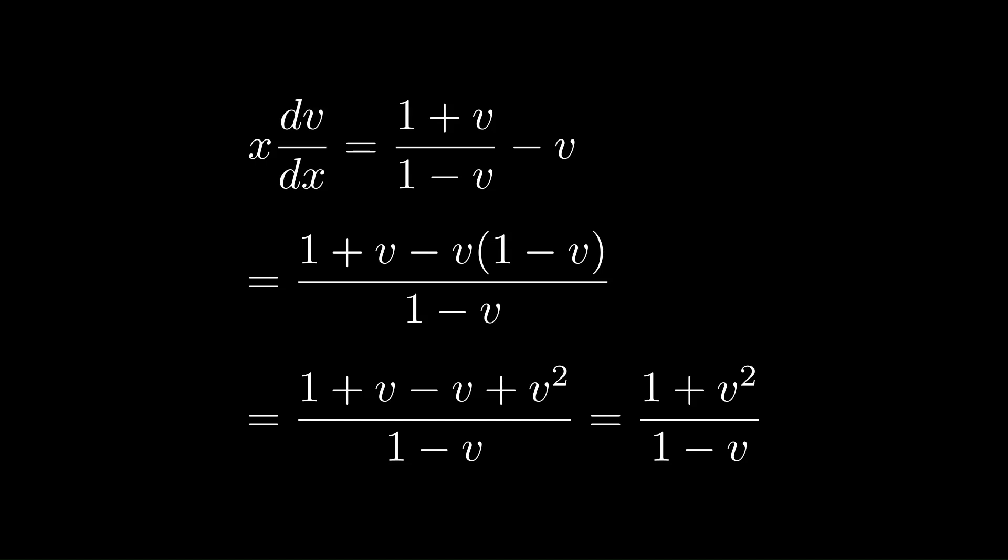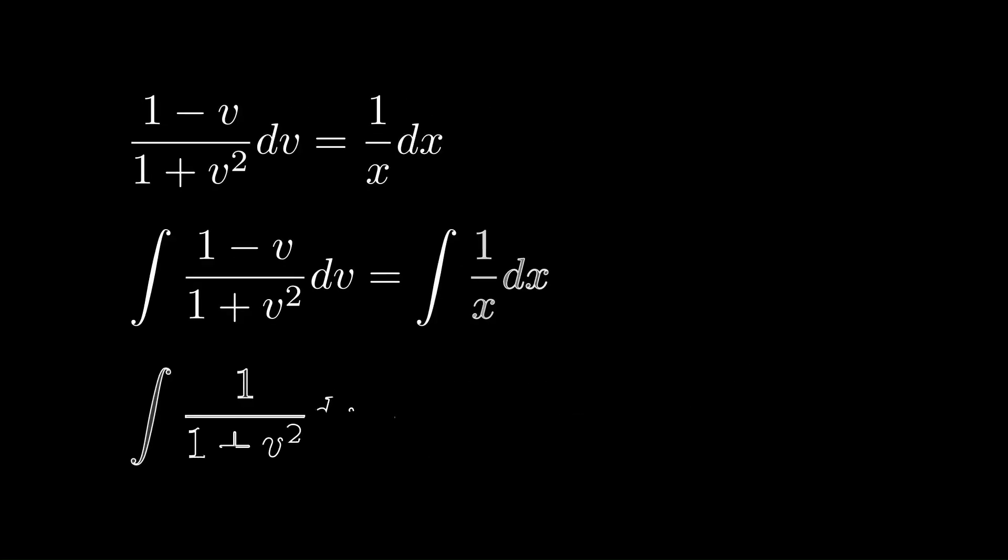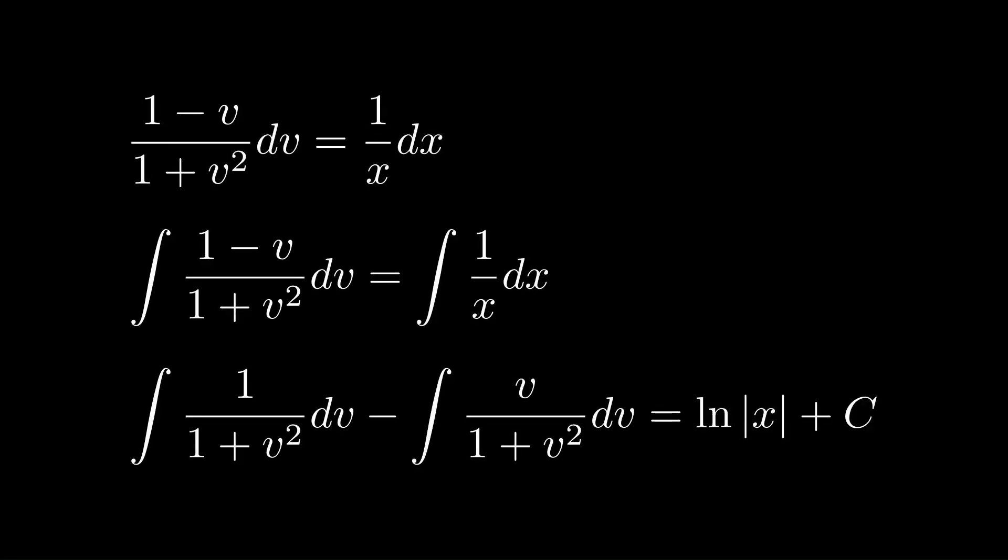Now we take the integral of both sides. The integral of 1/x is just ln|x|, and on the other side we have the integral of 1/(1 + v²) dv minus the integral of v/(1 + v²) dv, which equals ln|x| + c.